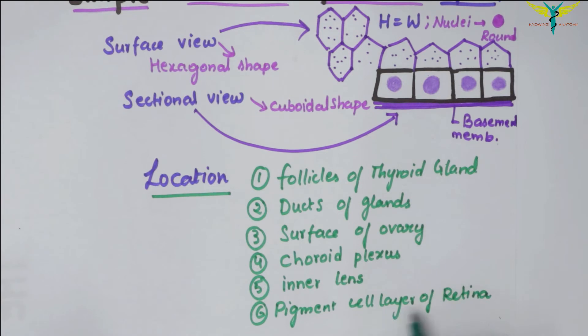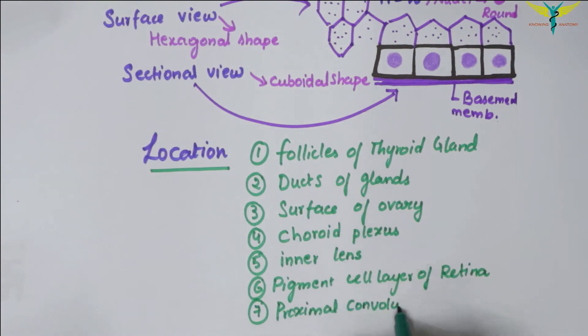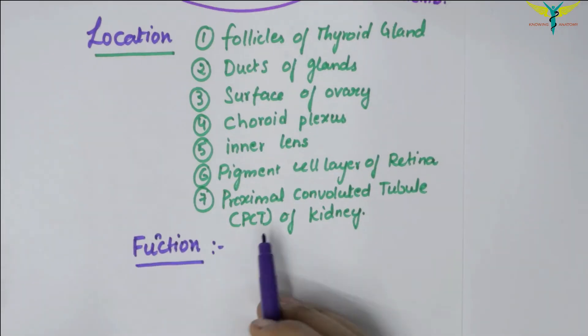For the histology of the retina, you can click on the I button. A cuboidal epithelium with prominent brush border is seen in the proximal convoluted tubules of the kidney.